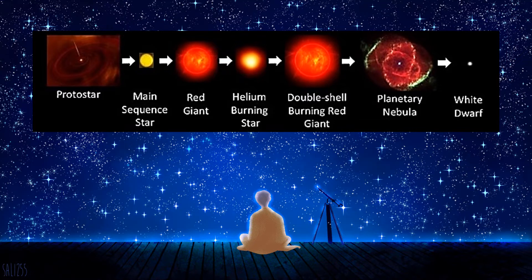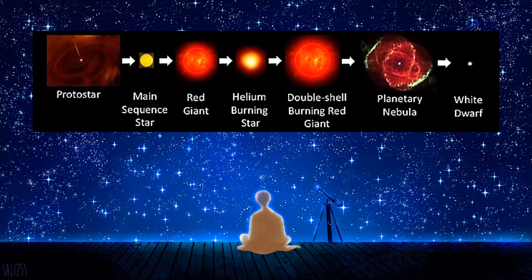In a low-mass star, with mass less than twice the sun's mass, there is not enough mass for carbon fusion to occur. However, the star's fuel is depleted, and over time, the outer material of the star is blown off into space. The only thing that remains is the hot and inert carbon core, and the star becomes a white dwarf.